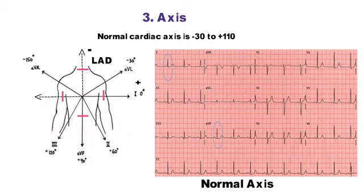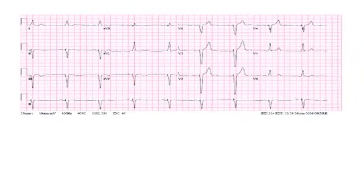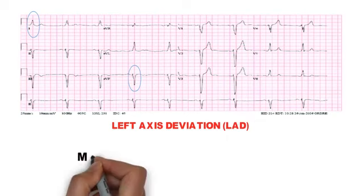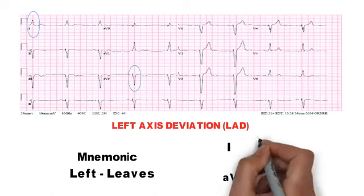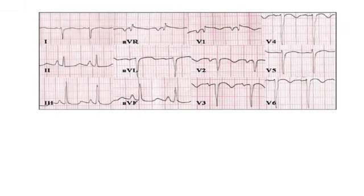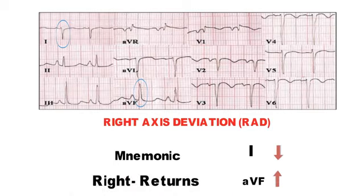If net QRS is negative in lead 1 and positive in aVF, the vector falls in the right axis deviation range. You can remember left axis deviation with the mnemonic 'Left Leaves' — deflections in lead 1 and aVF point in opposite directions as if leaving each other. Right axis deviation can be remembered with the mnemonic 'Right Returns' — deflections in lead 1 and aVF point toward each other.